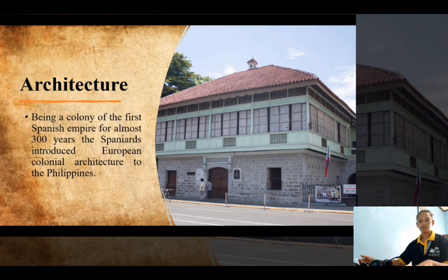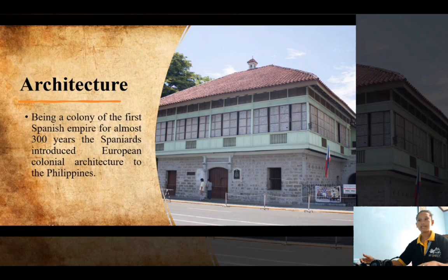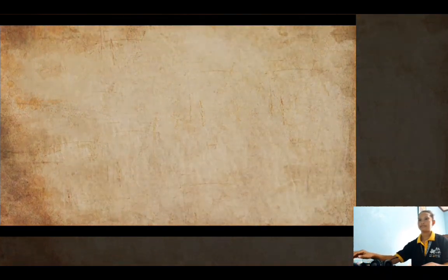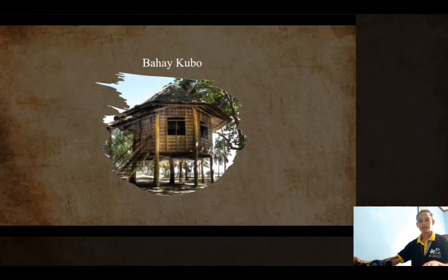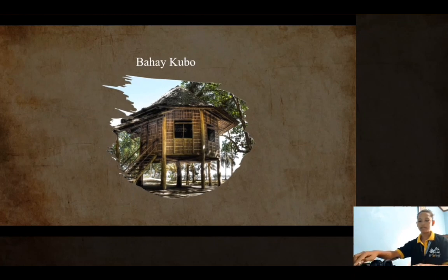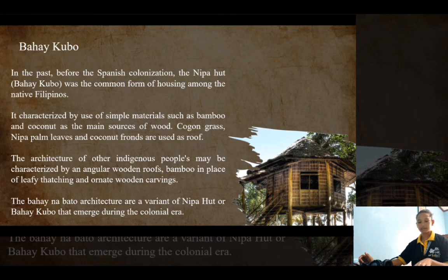The colonial era churches are the best examples and legacies of Spanish Baroque architecture called Earthquake Baroque, which are only found in the Philippines. The Bahay Kubo was the common form of housing among the native Filipinos, characterized by the use of simple materials such as bamboo and coconut as the main source of wood, with kogon grass, nipa palm leaves, and coconut fronds used for the roof. The architecture of indigenous people may be characterized by angular wooden roofs, bamboo in place of leafy thatching, and ornate wooden carvings. The Bahay na Bato architecture is a variant of the Bahay Kubo that emerged during the colonial era.